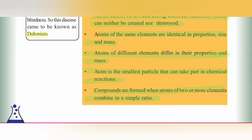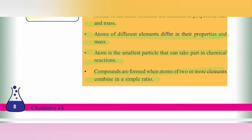Compounds are formed when atoms of two or more elements combine in a fixed ratio. For example, water is H2O — 2 hydrogen and 1 oxygen.